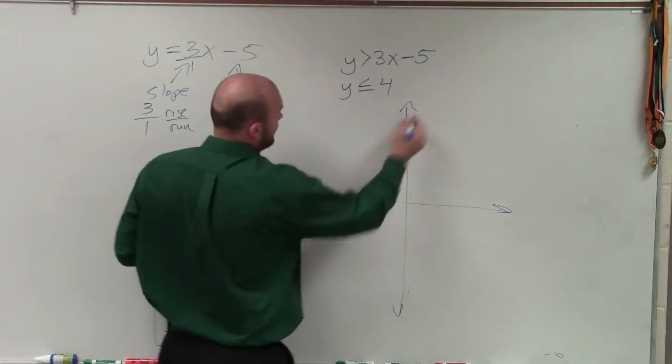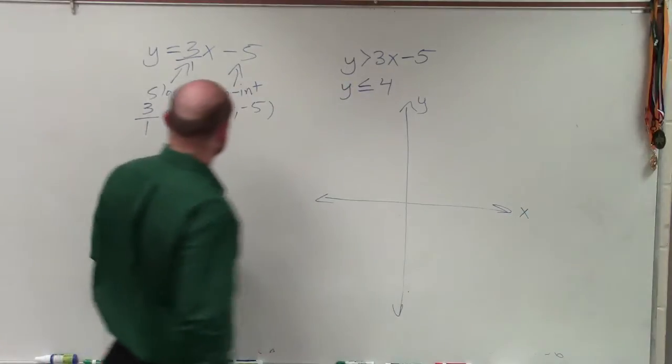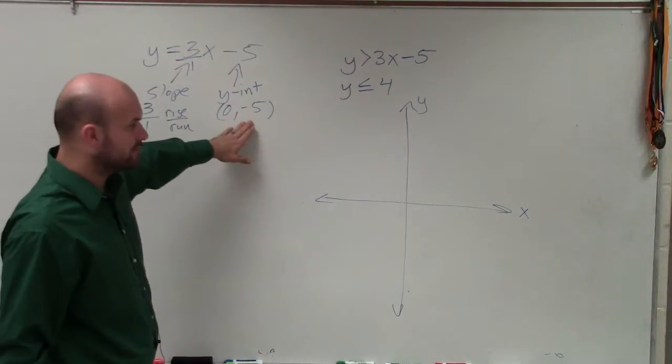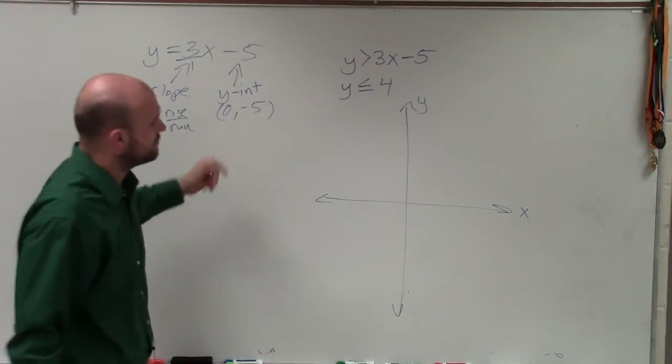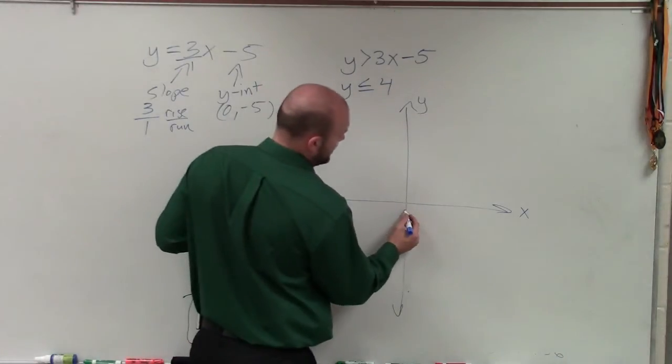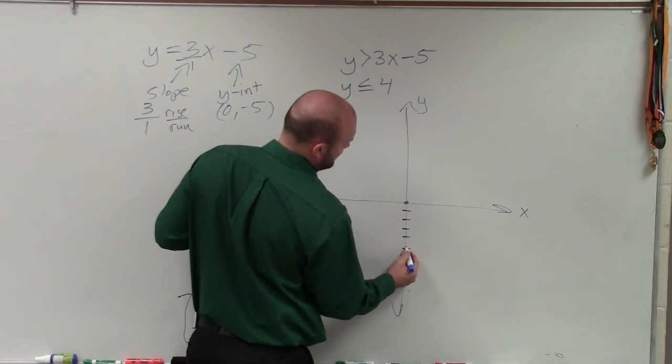So here I have the y-axis and I have my x-axis. Now remember, the y-intercept is your coordinate point. And that's going to be on your y-axis, because it's where the graph crosses the y-intercept. So I'm going to go down five units. So here's (0, 0). So I'll go down five units: 1, 2, 3, 4, 5.